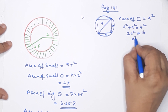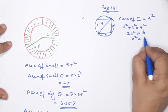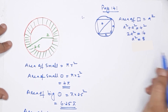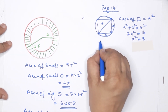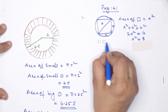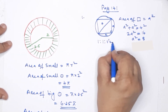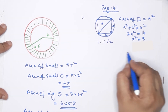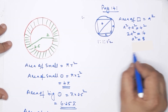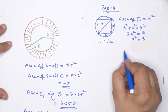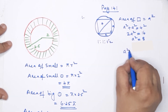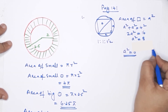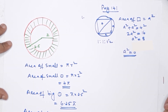A² equals 8. Using the ratio 1:1:√2, if the diagonal is 4 then the side is 4/√2 = 4√2/2, giving A² = 8. So the area of the square is 8.